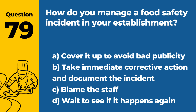Question 79. How do you manage a food safety incident in your establishment? a. Cover it up to avoid bad publicity. b. Take immediate corrective action and document the incident. c. Blame the staff. d. Wait to see if it happens again. Answer b. Take immediate corrective action and document the incident. Managing a food safety incident involves taking immediate corrective action to address the issue and documenting the incident for further analysis and prevention.